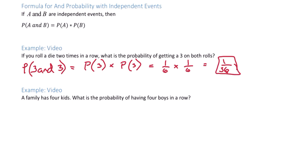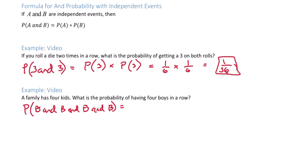In the second example, a family has four kids. What is the probability of having four boys in a row? We can think of this as the probability of having a boy and boy and boy and boy. Notice that the first kid has no effect on the probability of the second kid, the third, the fourth. So we have independent events: probability of boy times probability of boy times probability of boy times probability of boy.